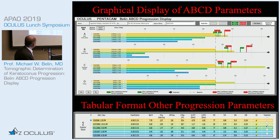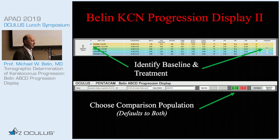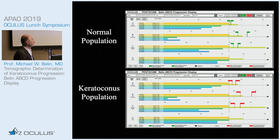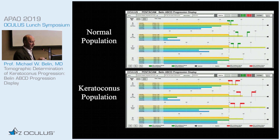The tabular section shows the classification, the progression index, ART max, and a number of anterior surface parameters historically used to determine progression. You can identify your baseline and mark when a treatment occurs. You can also choose your comparison population — either normal or keratoconic — with the default showing both. For very early or subclinical disease patients you should probably compare against the normal population, while more advanced disease should be compared to the keratoconic population.